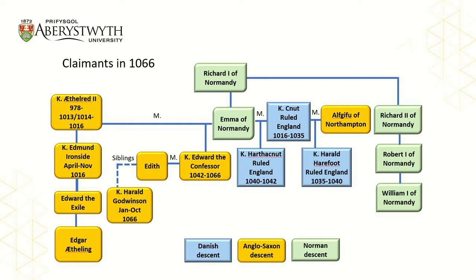In addition to William, there were two main Anglo-Saxon claimants to the throne: Harold Godwinson and Edgar Ætheling. Ætheling was a title given to Anglo-Saxons designated as heirs to the throne, and as grandson of a former king, Edmund Ironside, Edgar had a very good claim to the throne. However, he was a child and was not able to gather much support for his cause.